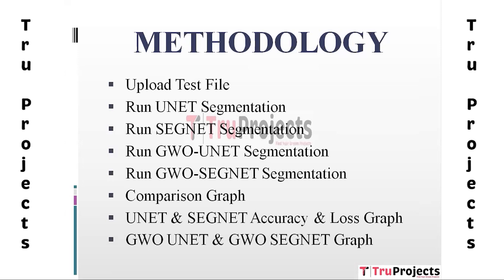UNet is a convolutional neural network architecture that uses a U-shaped encoder-decoder design with skip connections. It is suitable for biomedical image segmentation tasks due to its ability to capture fine details and localize objects accurately. The third module is Run SegNet Segmentation, where the SegNet model performs semantic image segmentation on the chest X-ray.